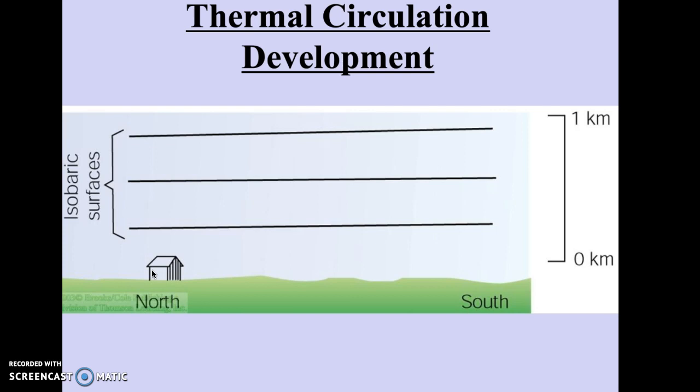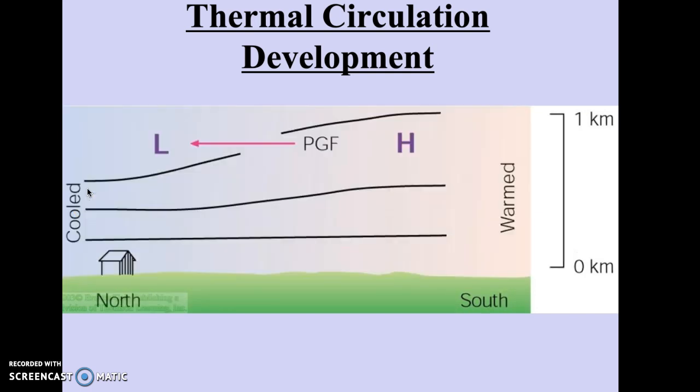So we can start with this simple diagram of a north-south setup in the lowest kilometer of the atmosphere, and you've got some pressure surfaces, isobaric surfaces, set up until you warm the south side. The warmed air is going to spread apart. You'll have this pressure surface rising up, creating an upper-level high pressure system.